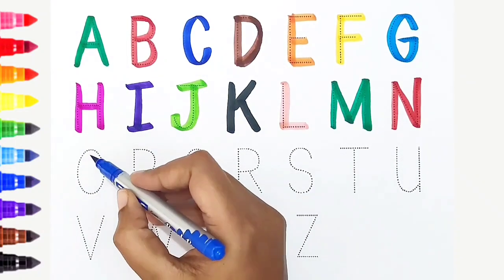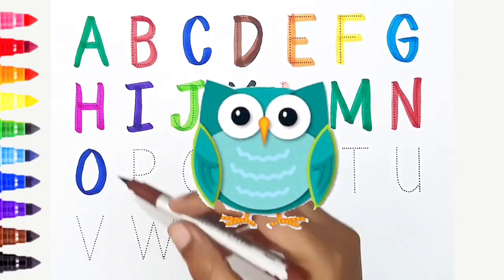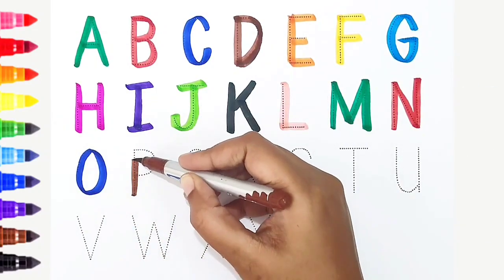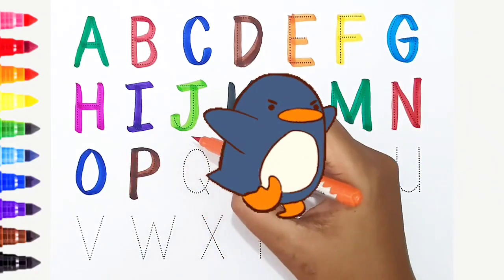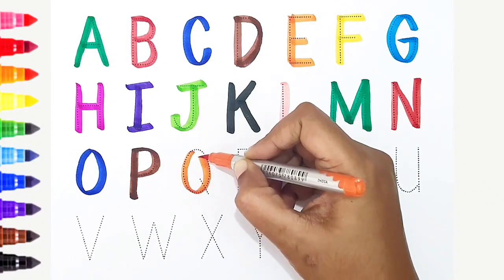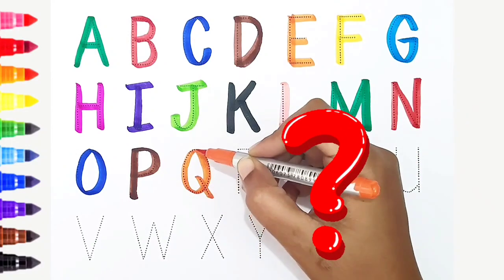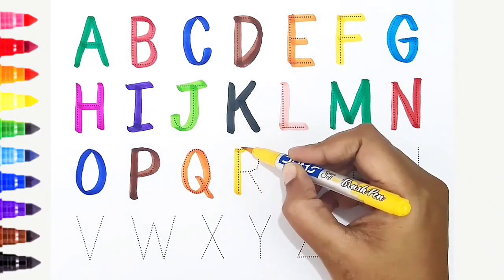O, dark blue color, O is for owl. P, brown color, P is for penguin. Q, orange color, Q is for question. R, yellow color, R is for rabbit.